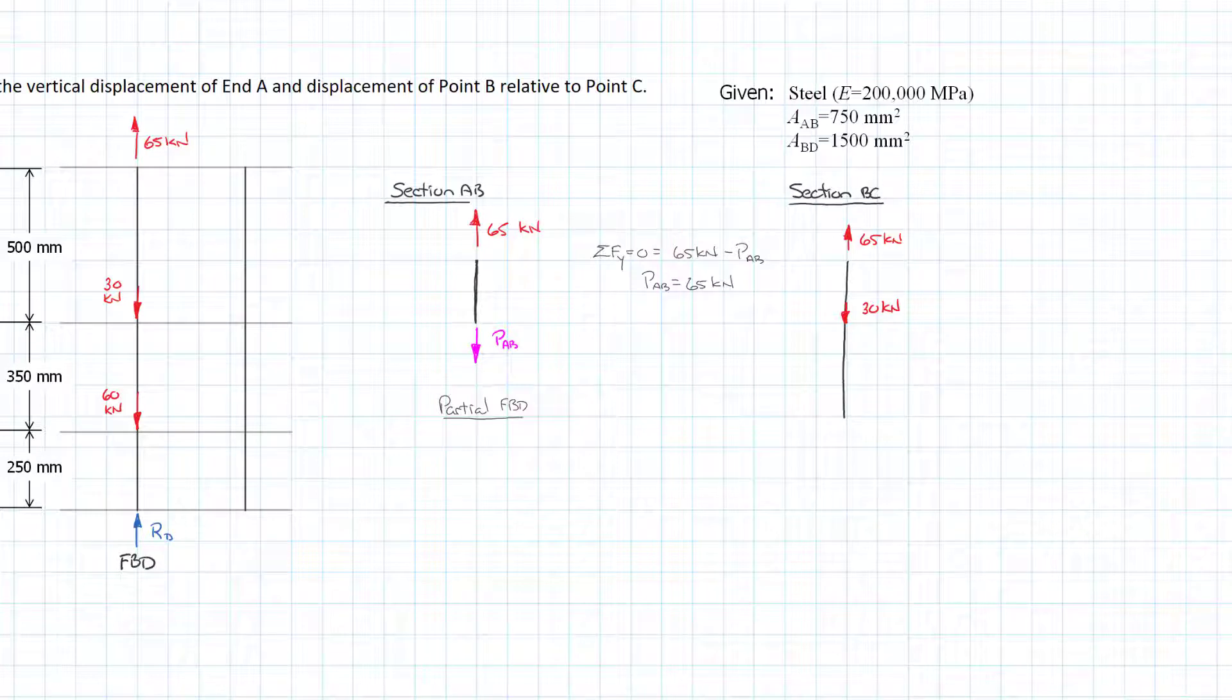That's where our section is drawn so now we have our internal load and that's going to be P_BC. We just very repetitively do our statics. Sum of the forces in y direction equals zero, equals 65 kilonewtons minus 30 kilonewtons minus P_BC. We get P_BC equals 35 kilonewtons.